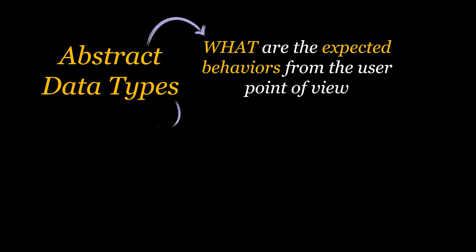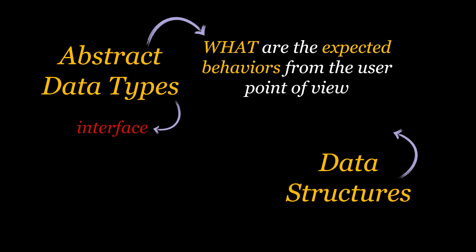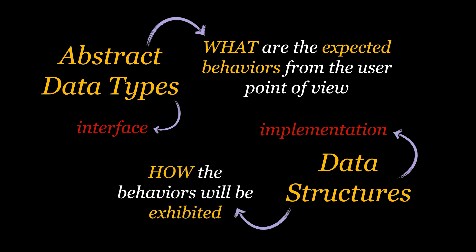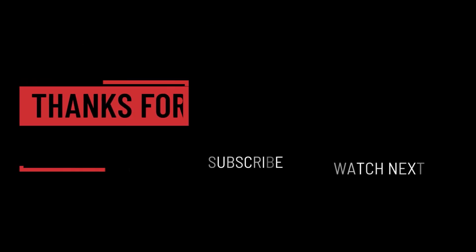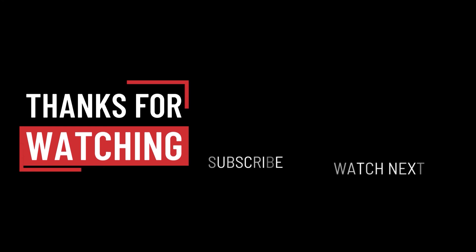To sum up everything: abstract data types state what the expected behaviors are from a user point of view. They are the interfaces for a certain underlying implementation or data structure. These implementations state how these behaviors will actually be exhibited without affecting the desired expected outcome. That's it for this video. I hope it was helpful. Thank you guys for watching, take care, and I will see you on the next one.